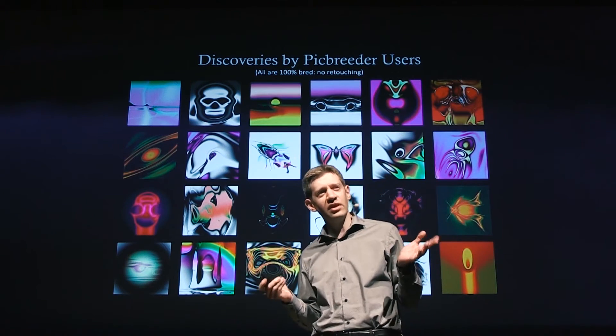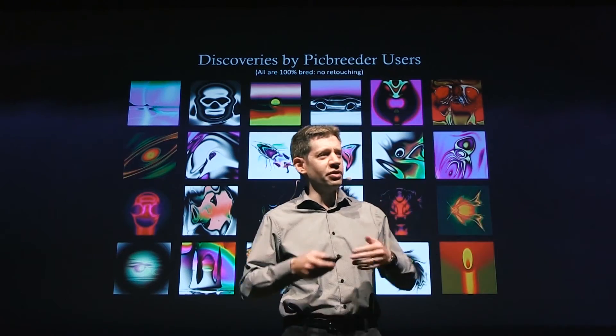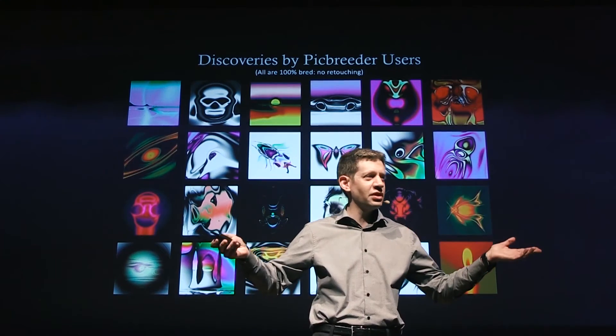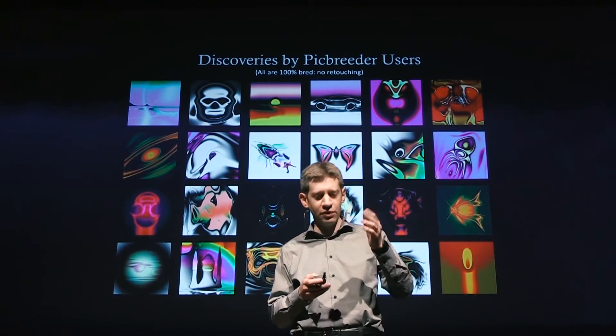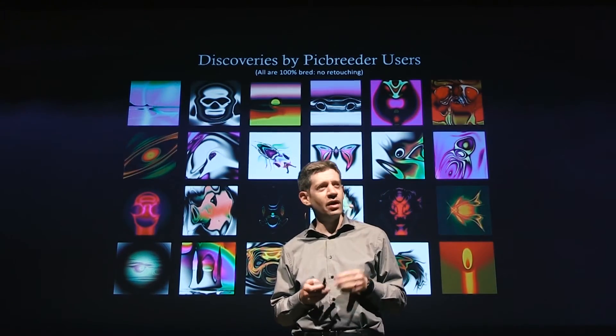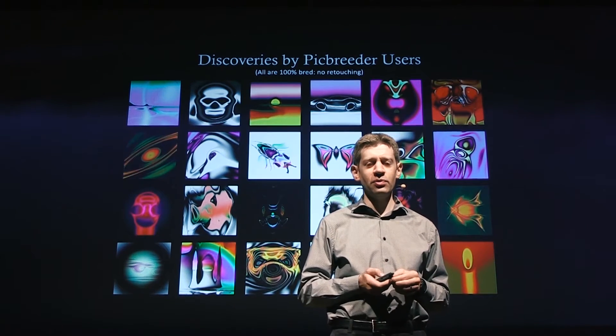They discovered a huge diversity of them. This is an example of a divergent system. This system — the longer you run it, the more interesting stuff comes out, and it doesn't stop. It's not like it all converged to the butterfly or the skull you see there. This is evolving everything at once, and this is actually showing some of the hallmarks of open-endedness.